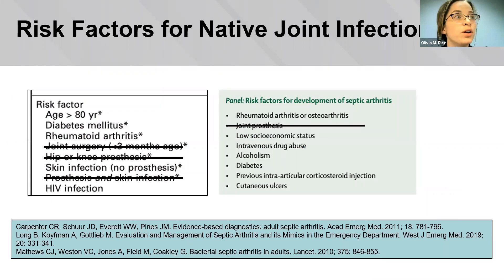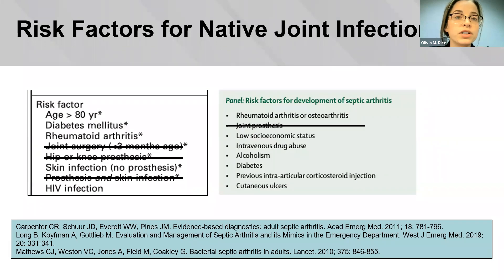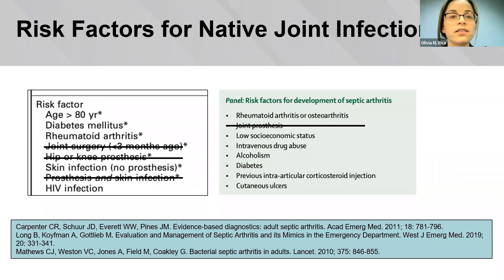When thinking about risk factors for native joint septic infection, excluding surgical site infection and PJI, key risk factors include increasing age, which typically coincides with pre-existing joint disease including arthritis. RA in particular carries especially high risk due to increased joint damage, poor skin condition, and immunosuppression. Other risk factors include IV drug use and systemic diseases disrupting immune function, including uncontrolled HIV, alcoholism, and diabetes, as well as local factors such as overlying skin disruption or nearby infection.